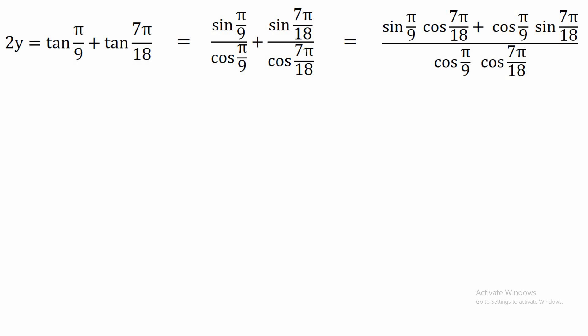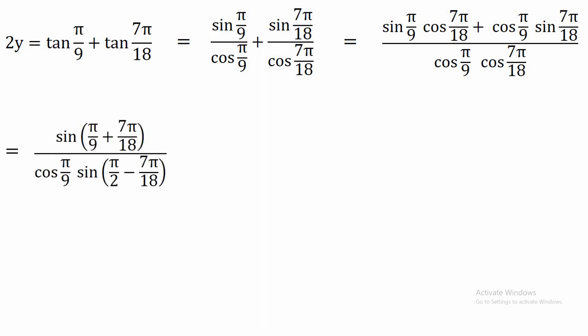As done in the previous case, we apply the sin addition formula to the numerator to get sin(π/9 + 7π/18). For the denominator, we convert cos(7π/18) into sin form as sin(π/2 − 7π/18). In the next step, we multiply 2 in both the numerator and denominator, giving 2·sin(π/2) in the numerator divided by 2·cos(π/9)·sin(π/9). In the numerator, sin(π/2) = 1, so we are left with only 2.